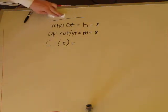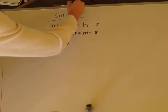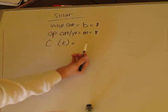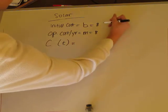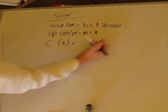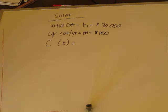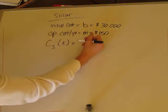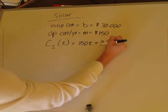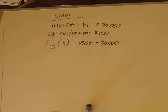Now for solar — again, you can pause the video and try it yourself. For solar, the installation cost is $30,000 and the operation cost per year — the slope — is only $150. So the cost for solar based on time is Cs(t) = 150t + 30,000. We don't need to write the dollar signs in the formulas since we know the output is always in dollars.